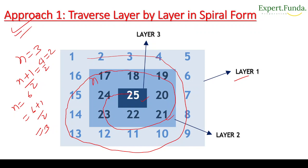Our approach today is to traverse layer by layer in spiral form — going 1, 2, 3, 4, 5, 6. Each round completes one circular traversal. We start traversing from the outer layer and move inside to the inner layer on every iteration. First we complete layer 1, then move inside to layer 2, then to layer 3.